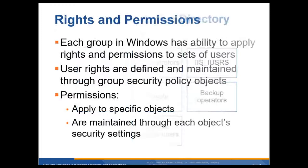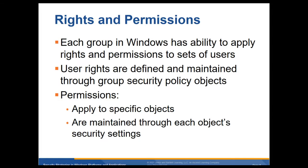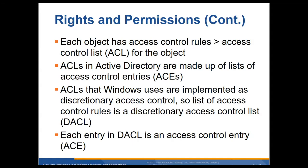Rights and permissions — each group in Windows has the ability to apply rights and permissions to a set of users. User rights are defined and maintained through group security policy objects, such as when you create a group. Permissions apply to specific objects in that group and are maintained through each object's security settings, using security identifiers from the previous chapter. Each object has an access control list. If you go to the properties of a folder or file, you will see its ACLs. ACLs in Active Directory are made up of lists of access control entries — read, modify, delete, etc. ACLs that Windows uses are implemented as discretionary access control lists, DACLs. Each entry in the DACL is an access control entry.